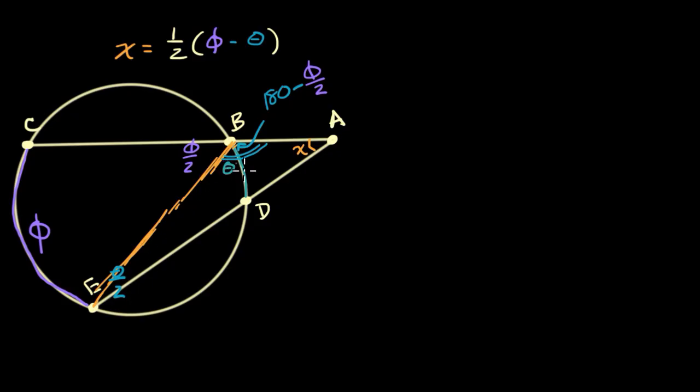Well, now we know two angles in the triangle. We can figure out the third. We can write that X is going to be equal to 180 minus these two. I could have just said that X plus this plus that. Actually, let me just do it that way. So X plus theta over two, plus 180 minus phi over two.